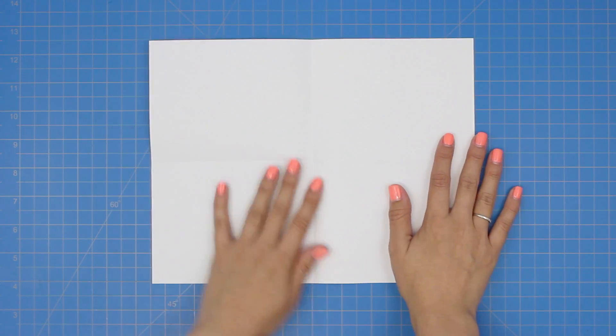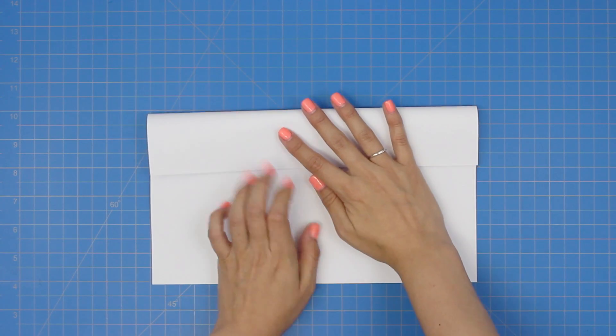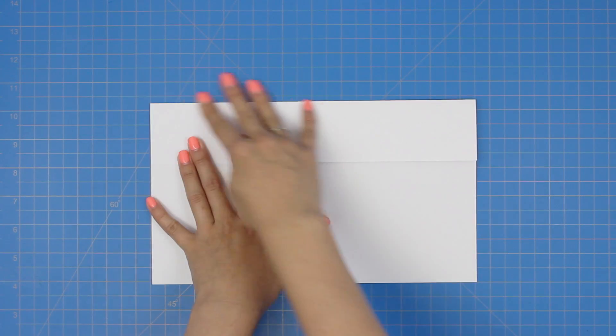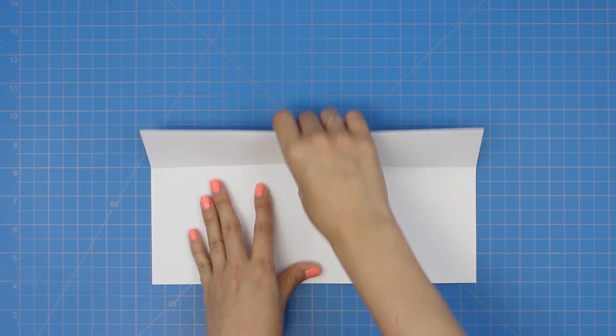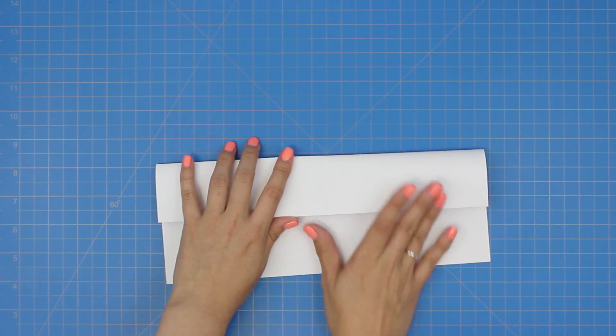Open the page back up and fold the top edge to the center crease. Now, fold the top down at the center crease.